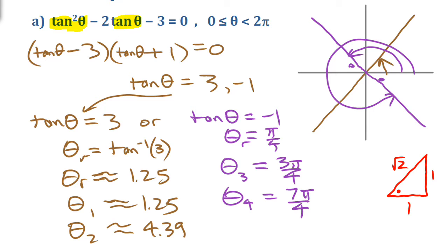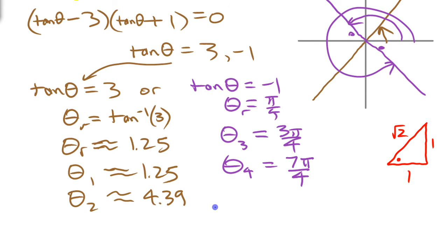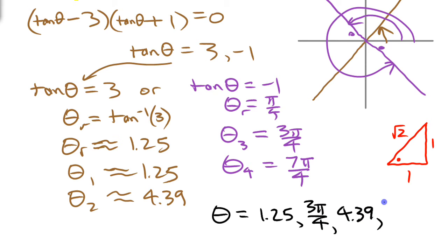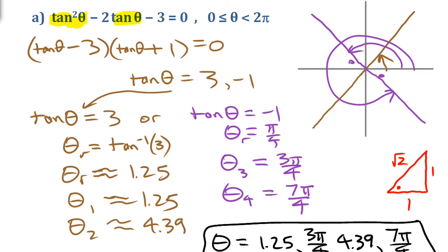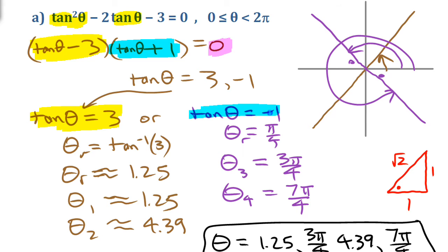Writing all our solutions in order: 1.25, 3pi over 4, 4.39, and 7pi over 4 — those are the four solutions. The principle here is that you write the original equation as two factors equaling 0, and one of those factors must equal 0. So either tan theta minus 3 equals 0 — meaning tangent equals 3 — or tan theta plus 1 equals 0 — meaning tangent equals negative 1.